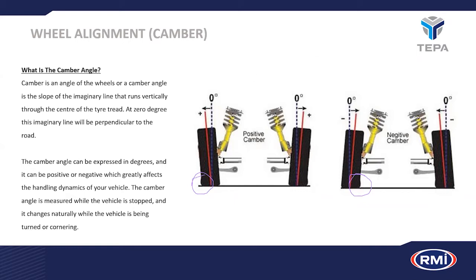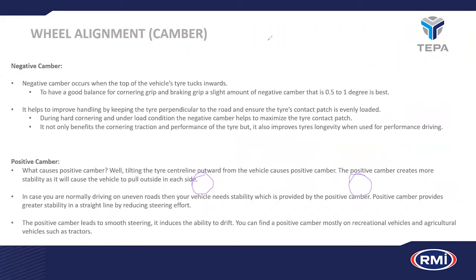Negative camber is pretty much a racing benefit. It occurs when the top of the tire tucks inwards to provide good balance for cornering and braking grip. A slight amount of negative camber — 0.5 to 1 degree — is best for a normal road-going car. I've personally been required to set up race cars with 3 to 4 degrees of negative camber, which would shred tires very quickly on a public road. Negative camber helps keep the tire perpendicular to the road during hard cornering or load conditions, stabilizing the contact patch.